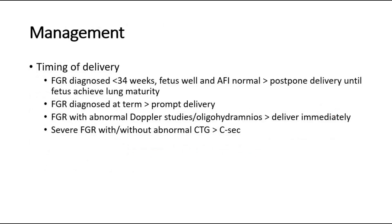For management of fetal growth restriction, the most important part is the timing of delivery. In cases where FGR is diagnosed prior to 34 weeks and the fetus is well with a normal amniotic fluid index, delivery can be postponed until the fetus achieves lung maturity. In cases where FGR is diagnosed at term, prompt delivery is contemplated. Irrespective of the period of gestation, if FGR is diagnosed with abnormal Doppler studies or oligohydramnios, the fetus is delivered immediately. Caesarean section may be the choice of delivery mode if there is severe FGR with or without an abnormal CTG.